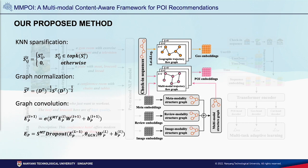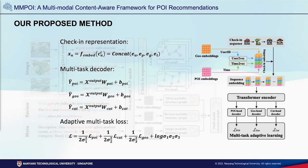To address the third challenge of the semantic difference between multimodal content and user check-in behavior, we propose a multimodal trajectory flow graph that integrates the multimodal latent semantic relationships with check-in sequences. Additionally, we construct a geographic trajectory flow graph to capture the geographical sequence relationships. Finally, we design an adaptive multi-task transformer to model the user's comprehensive movement patterns for the next POI recommendation.